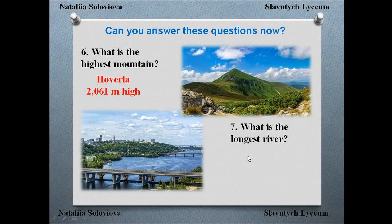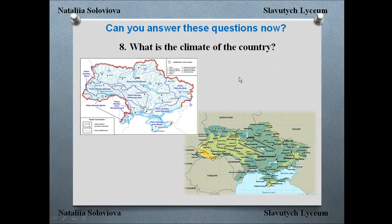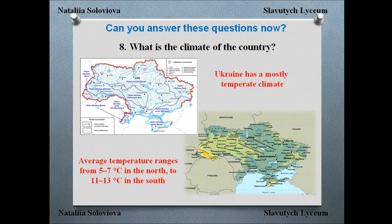And what is the longest river? The main river of Ukraine is Dnipro — you can find it mentioned in poems and different tales. Its length is 981 kilometers. What is the climate of the country? Ukraine has a mostly temperate climate. The average temperature ranges from 5 to 7 degrees Celsius in the north, to 11 to 13 degrees Celsius in the south.